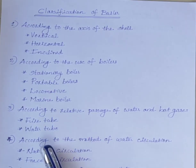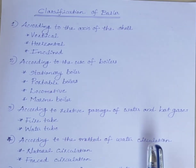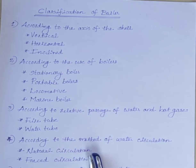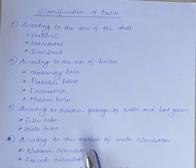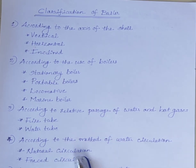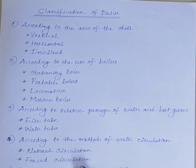The next classification is according to the method of water circulation: natural circulation boiler and forced circulation boiler. If the circulation of water or steam is caused by a density difference — due to temperature variation — it is called natural circulation. In forced circulation, a water pump forces the water along its path.